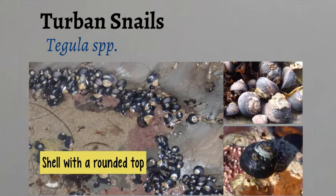Turban snails are one of the most common snails along the coast here in Monterey Bay and are very abundant in the high and mid-tide zone of the rocky intertidal. These snails are herbivores that graze on algae. Their shells are smooth with deep purple, black, and brown colorations, usually with a copper-colored top.